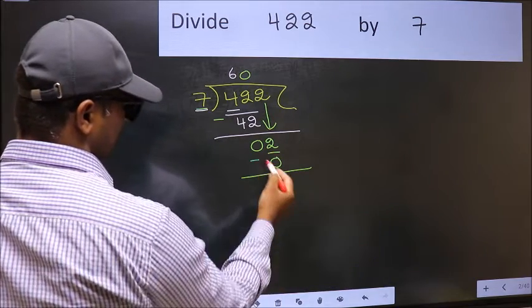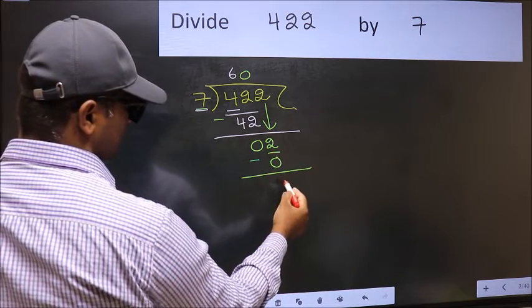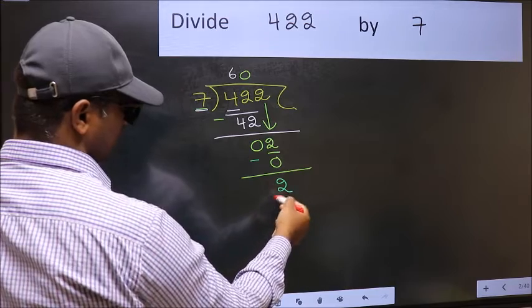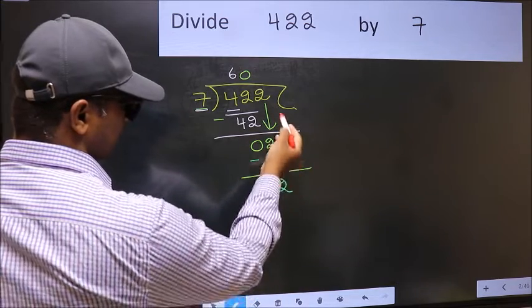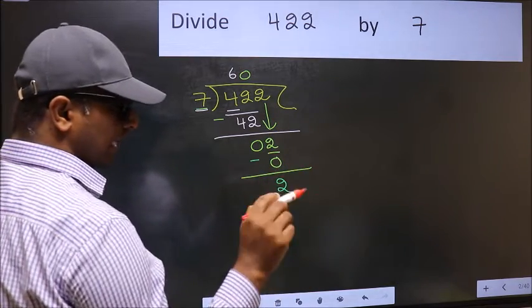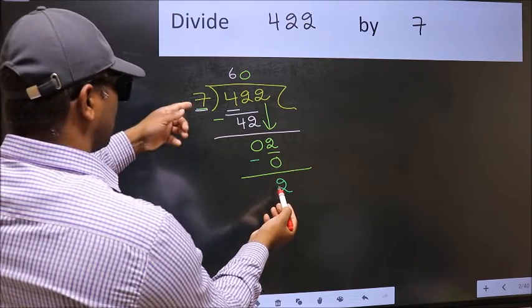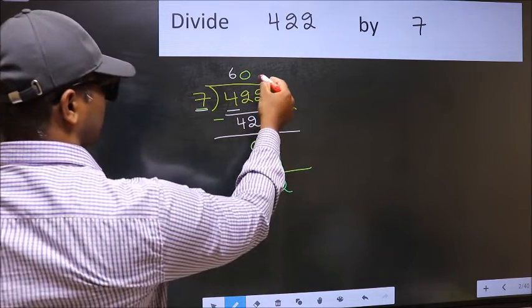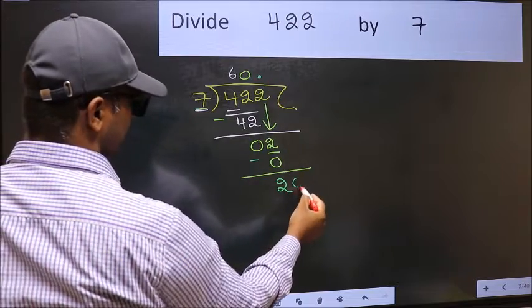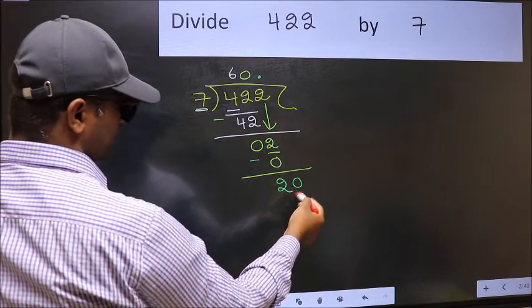Now you should subtract. 2 minus 0, 2. Over here, we did not bring any number down. And 2 is smaller than 7. So now you can put dot and take 0. So, 20.